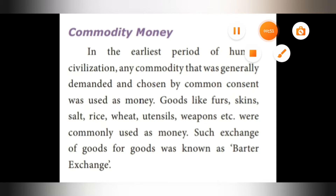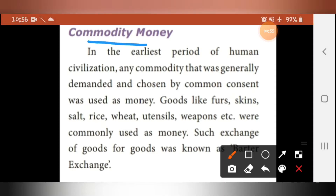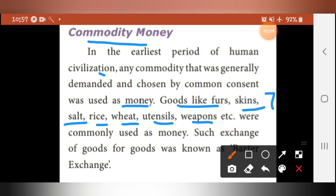We will start from the first one: commodity money. In the earliest period of human civilization, any commodity that was generally demanded and chosen by common consent was used as money. Goods like furs, skins, salt, rice, wheat, utensils, weapons, etc. were commonly used as money in the earliest stages. Such exchange of goods for goods was known as the barter system.